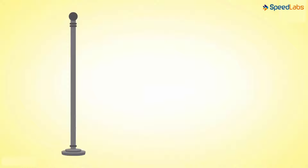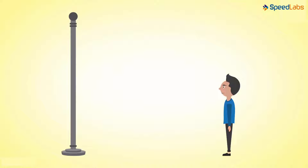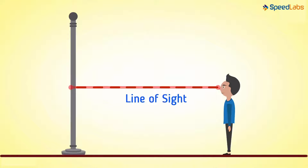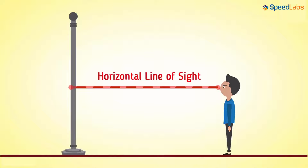We have a flagpole here without a flag. It is mounted vertically with its base fixed to the ground. Say a person is standing some distance away from this pole and looking straight at it. The line drawn from the eye of the person to the distant point where the person is looking is called line of sight. Since this line is parallel to the surface, we call it the horizontal line of sight or simply a horizontal line.